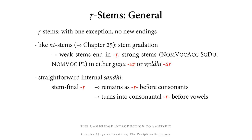The weak stem ends just in vocalic R. The strong stem, which is used in the strong cases — i.e. nominative, vocative, accusative singular and dual, and nominative and vocative plural — has either guṇa-ṛ or vṛddhi-ṛ. Concerning their internal sandhi, whenever we have stem-final vocalic R, this remains as vocalic R before an ending that begins with a consonant, but turns into consonantal R whenever we have an ending that begins with a vowel.